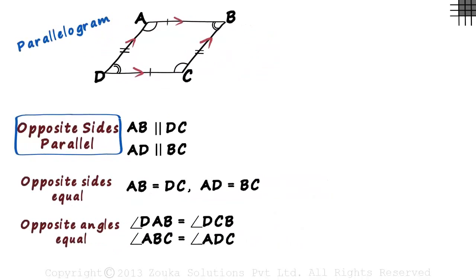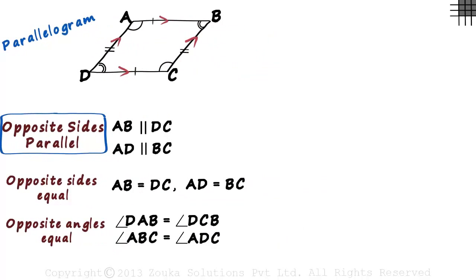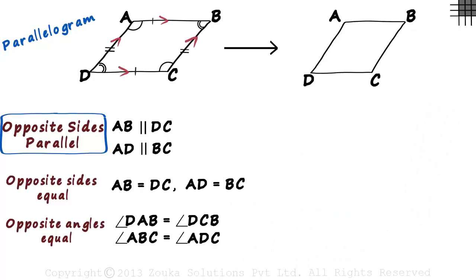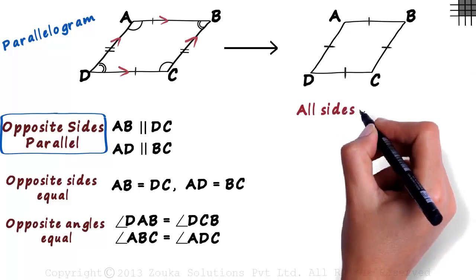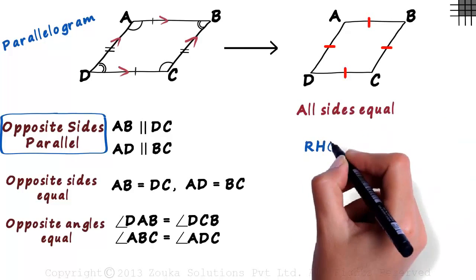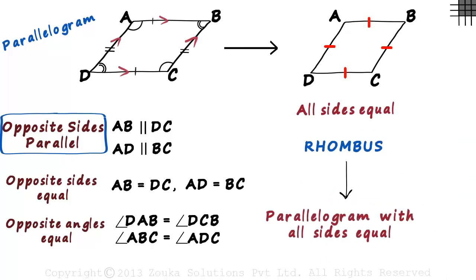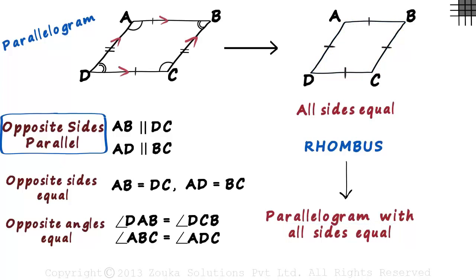Let's see a special case of a parallelogram. In this parallelogram, all the sides are equal to each other. This is a rhombus. So a rhombus is a parallelogram with all its sides equal. It will have all the properties of a parallelogram as well as this additional property that all its sides will be equal.